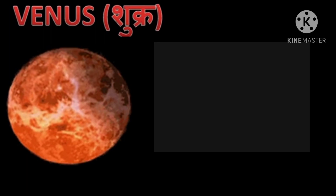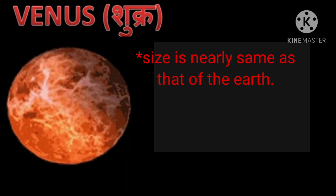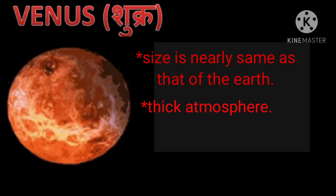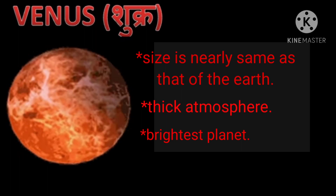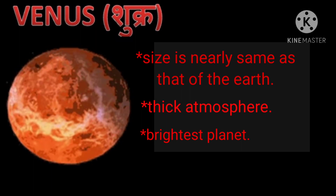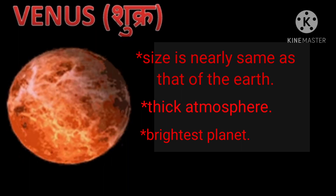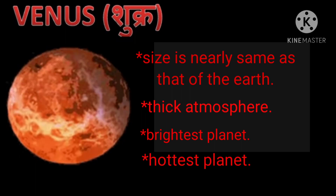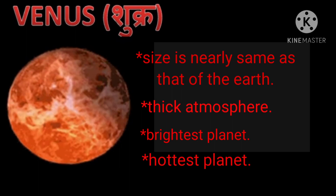The next planet nearest to the sun is Venus — which we call Shukra. Its size is nearly the same as that of the Earth. It receives a much larger amount of heat and light from the sun compared to the Earth. Venus has a very thick atmosphere which reflects back a large amount of solar energy that falls on it. Venus is therefore the brightest object seen in the sky after the sun and the moon. Its thick atmosphere also traps a large amount of solar energy reaching its surface, making it the hottest of all the planets.